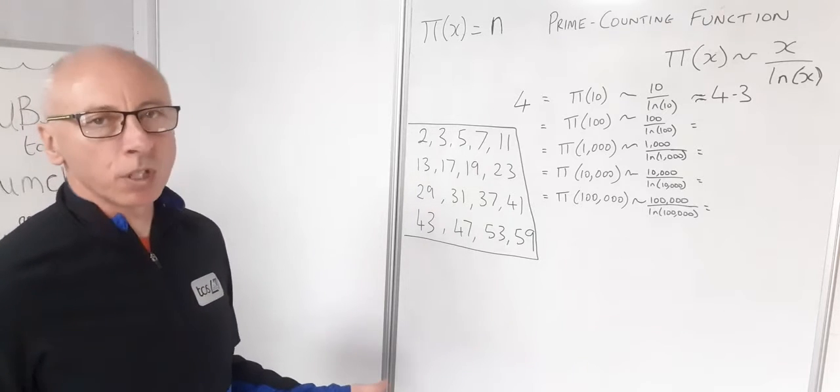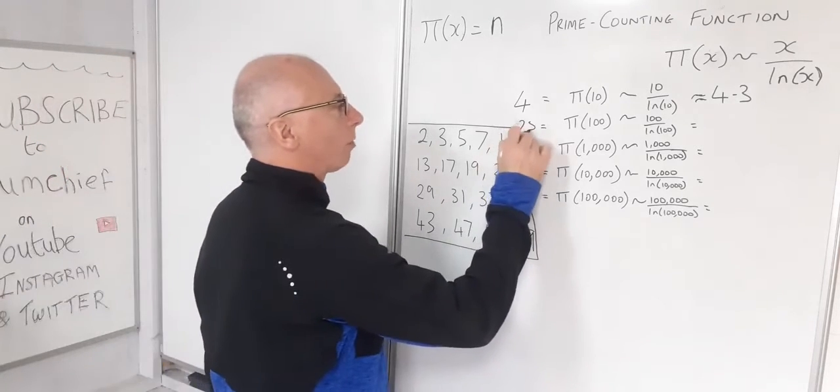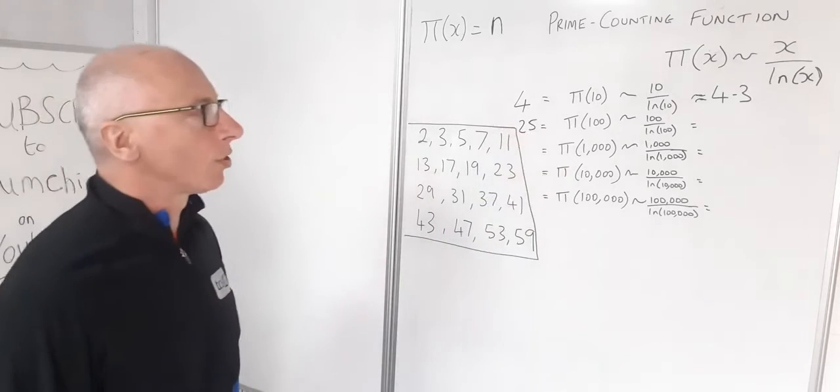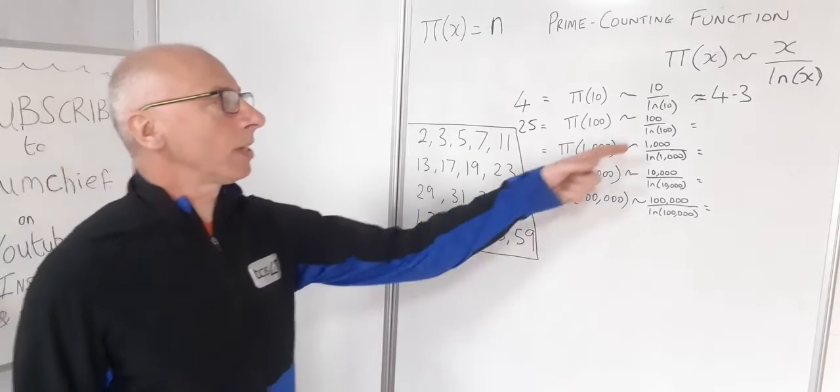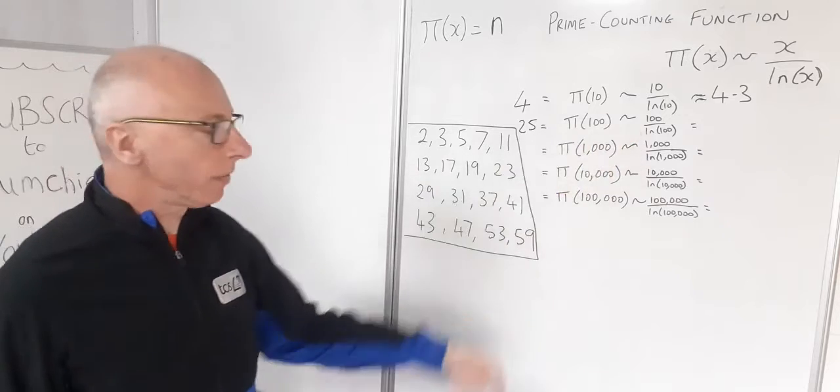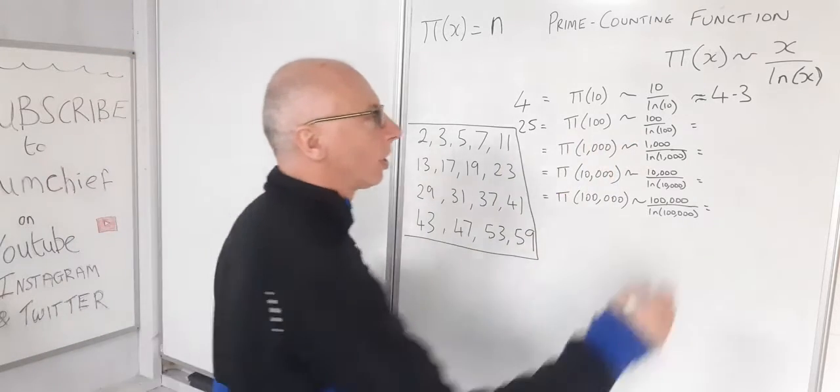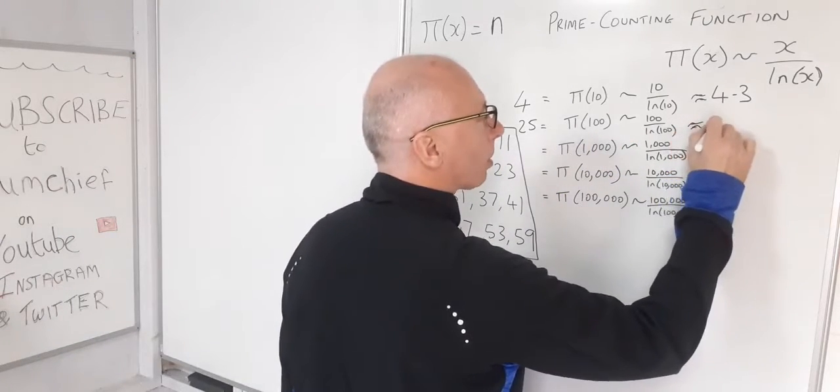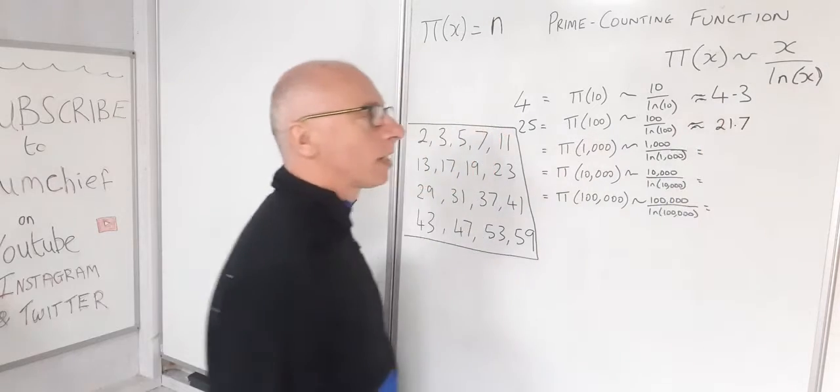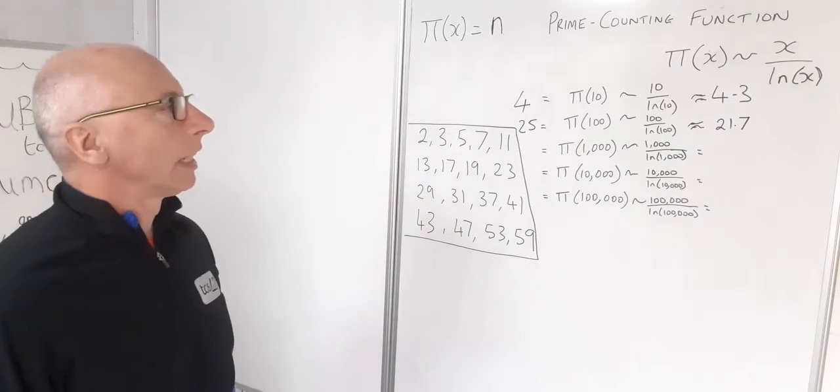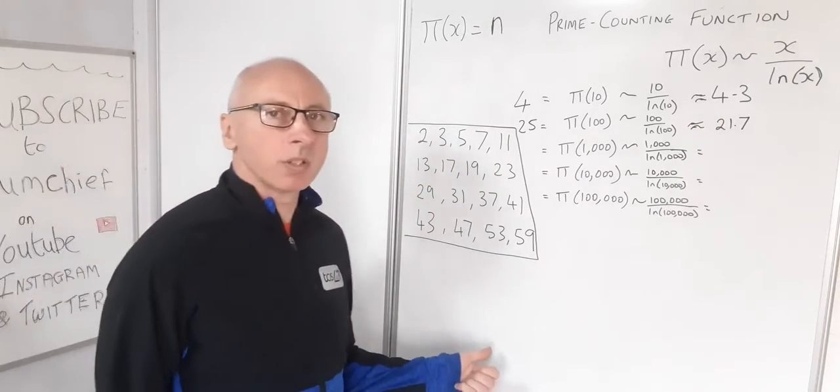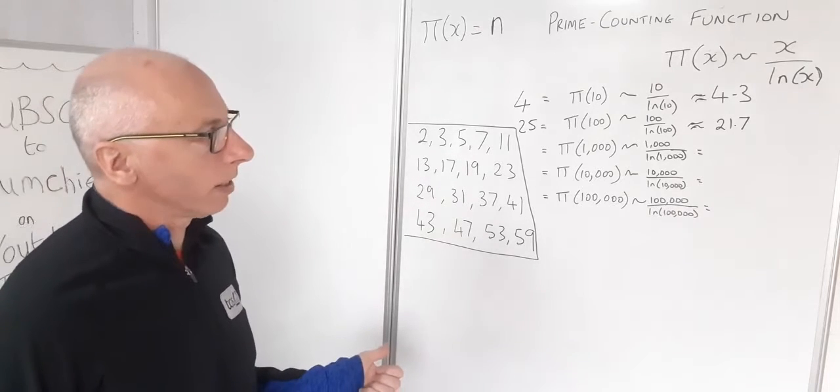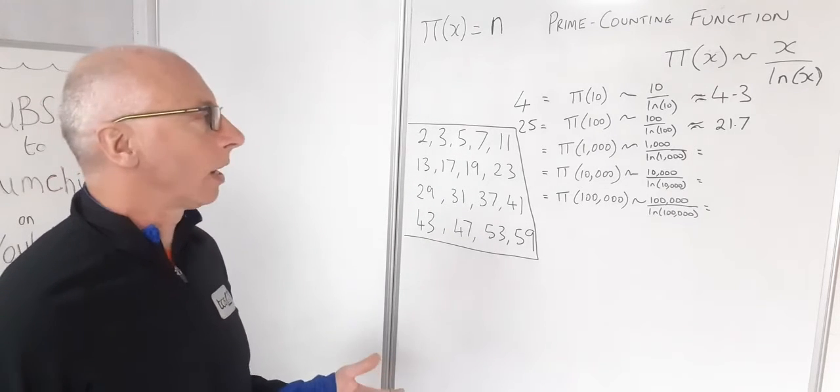What happens up to 100? Well there's 25 prime numbers up to 100. If you put in this calculation, 100 divided by the natural log of 100, we get approximately 21.7. Again that's pretty close, but it's further than 10 percent away this time. So that's moving away from how close we want to be.